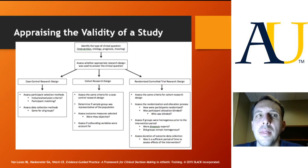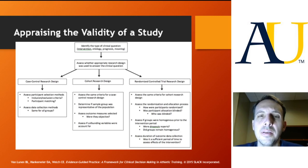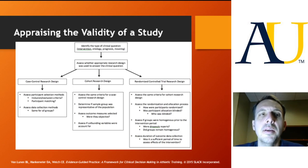Depending on whether or not there are matched controls, you have to look at the design in particular and make sure it was consistently applied throughout. With case-control research designs, it's much more of a natural process, so you might see data being collected in more than one way. That's fine if we're just looking at a treatment effect over time. But if we start trying to make comparisons between matched controls with data collected one way and an intervention group with data collected another way, that would make the results not valid.